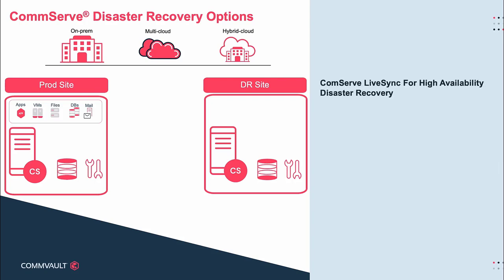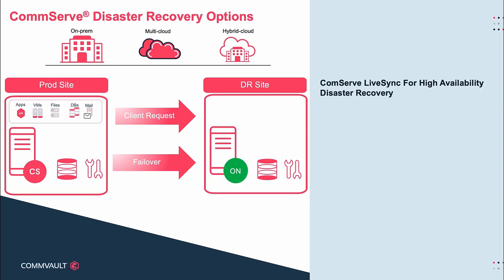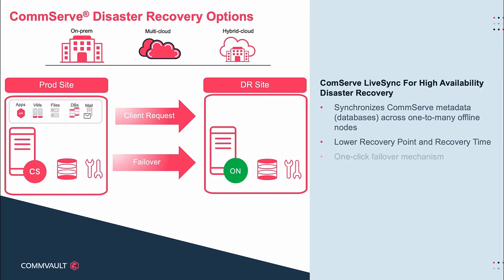The second DR option is the High Availability CommServe host, also referred to as CommServe LiveSync. This feature keeps the CommServe server ready for disaster recovery and provides the ability to quickly fail over to a designated standby host in the event of a disaster. Hyperscale X appliances with CommServe installed can also be utilized as a failover host. When a failover is performed, a designated proxy client routes the request to the standby CommServe host so that clients can seamlessly connect and continue operations. This solution provides organizations with a lower recovery point and recovery time compared to using DR backups, and features a one-click failover mechanism that automates the multi-step recovery process, preventing human error and speeding up recovery. You can easily perform failover of the production CommServe to a standby CommServe in both planned and unplanned failover situations.